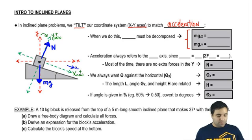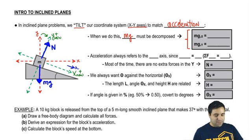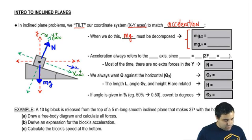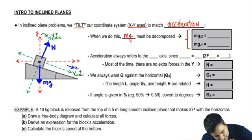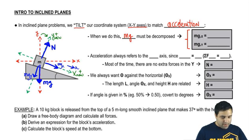So in incline plane problems, we're going to have to decompose mg. mg must be decomposed into mgx and mgy, and it's going to look like this. This here is mgx, and this here is mgy. So let me write that in here. This blue arrow here is mgx, and then this blue arrow here is mgy.